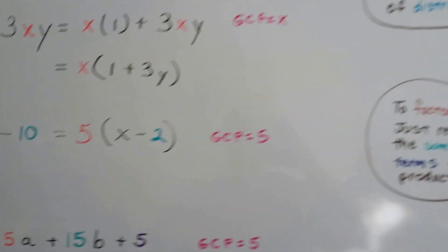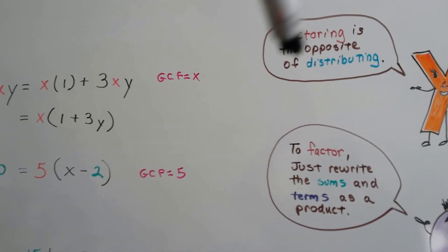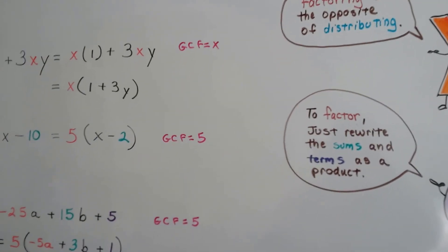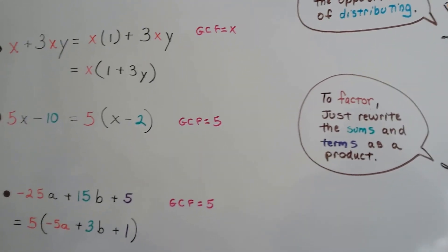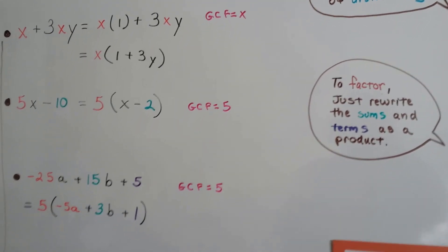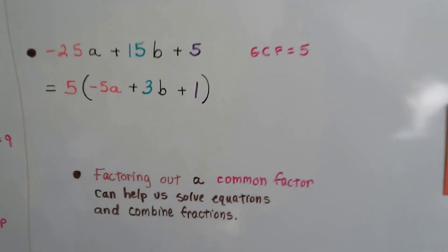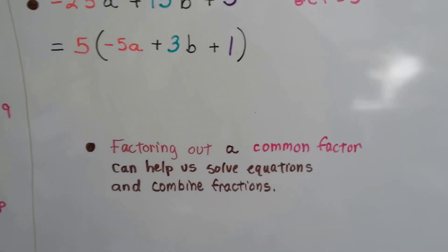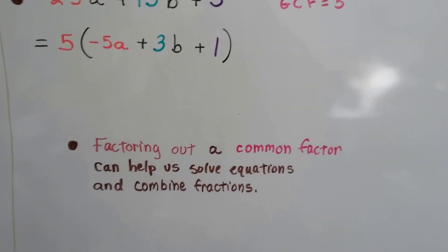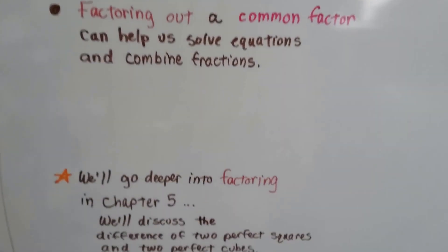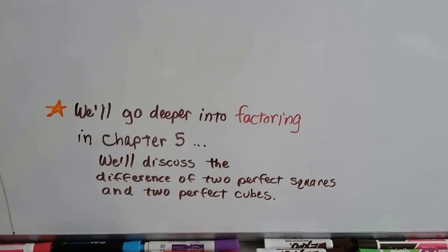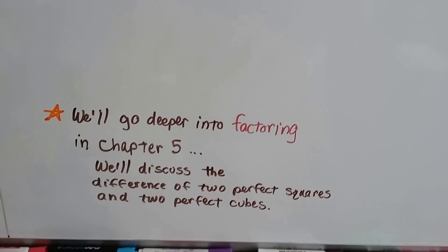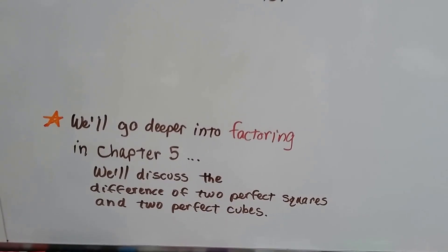Factoring is just the opposite of distributing. To factor, you just rewrite the sums and terms as a product. Factoring out a common factor can help us solve equations and combine fractions. We're going to go deeper into factoring in Chapter 5. We're going to discuss the difference of two perfect squares and two perfect cubes.